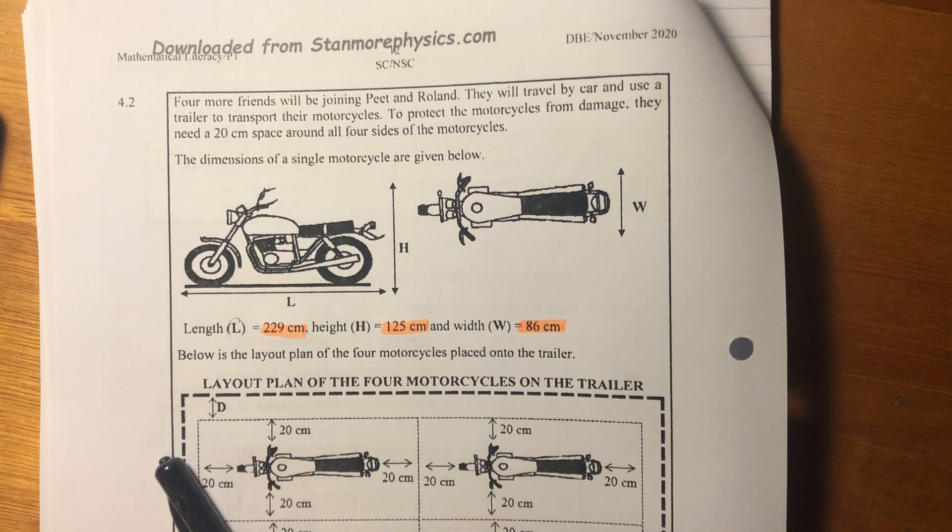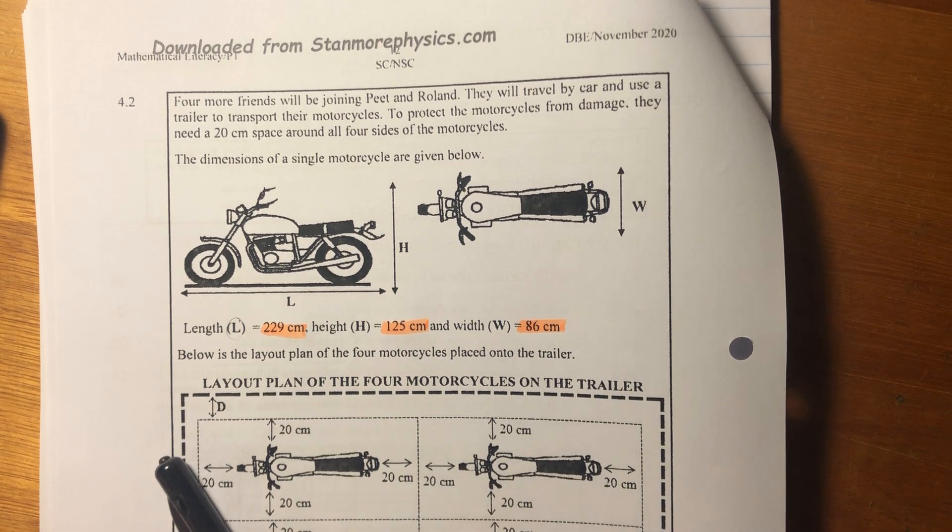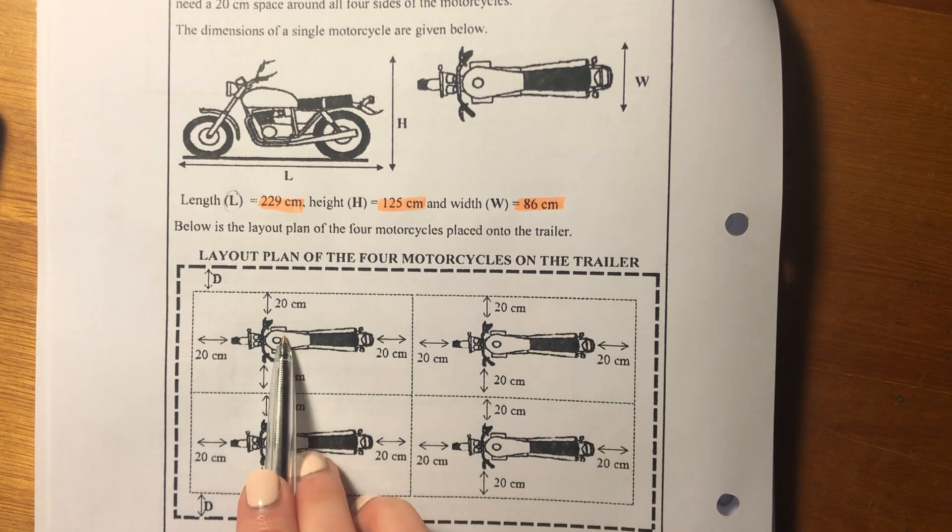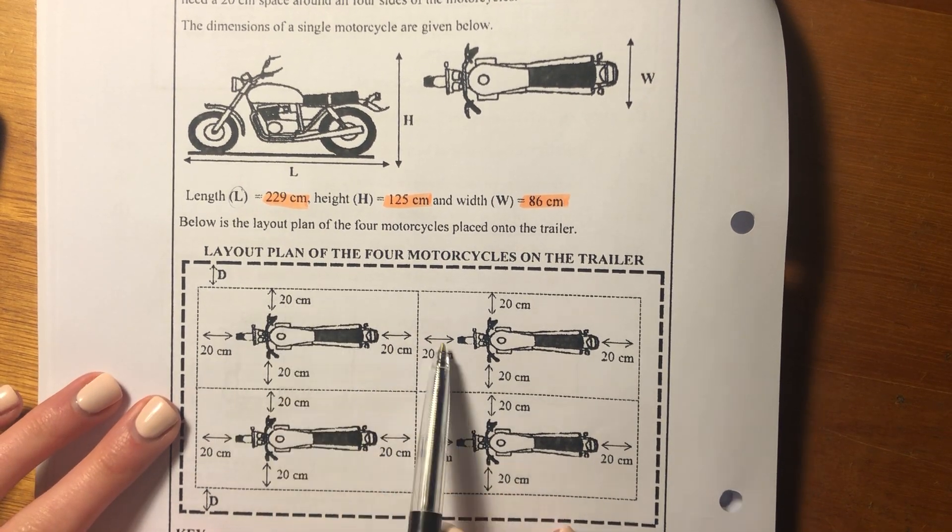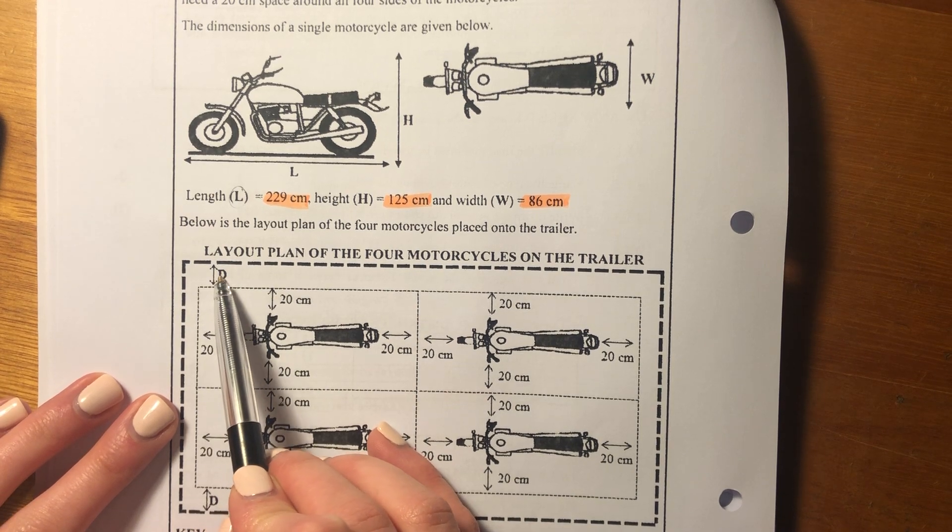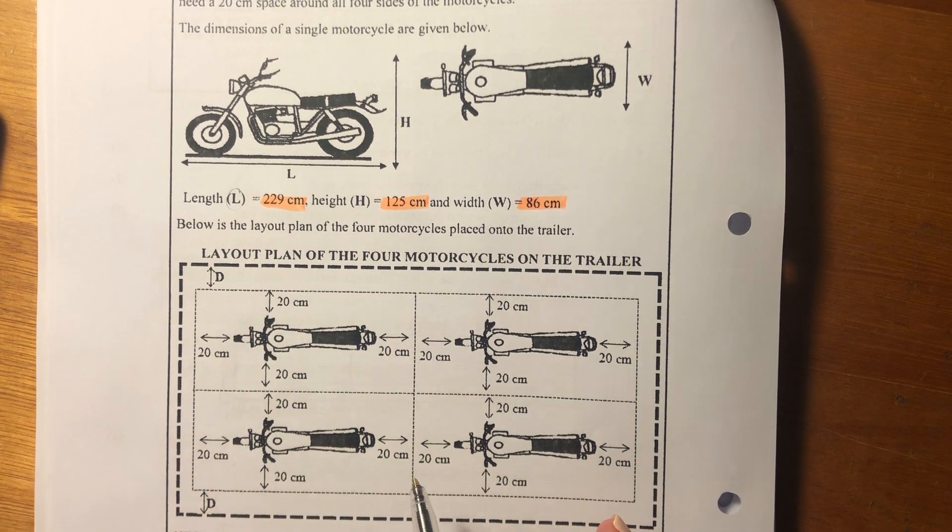Okay, so below is the layout plan of the four motorcycles placed onto the trailer. So we see that there's four motorcycles. They have a 20 centimeter all around them. And then we see there's also like a space right between the trailer and the motorcycles.